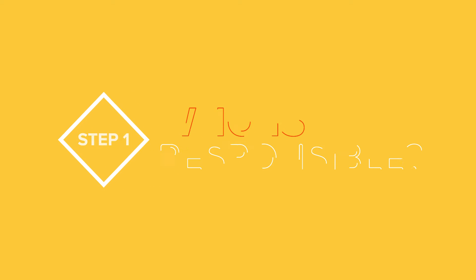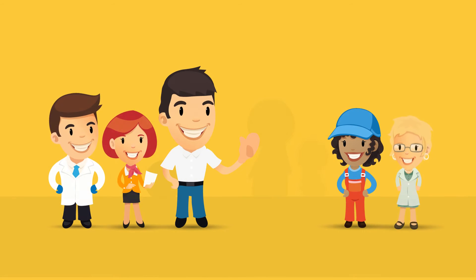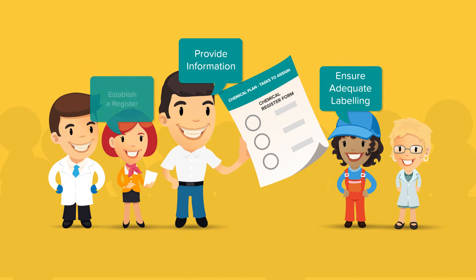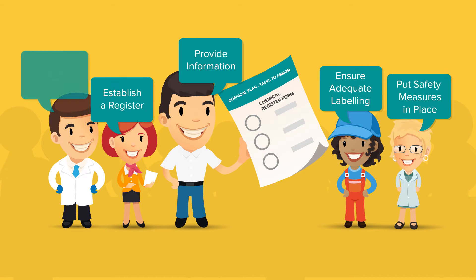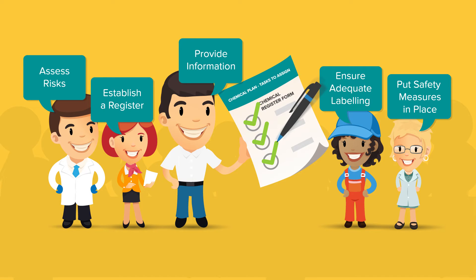Step 1: Decide who is responsible for key tasks and plan action. Appoint a person or team to oversee the use and storage of chemicals at your school to ensure all legal requirements are met. Set up a plan that outlines what needs to be done, by whom and when.